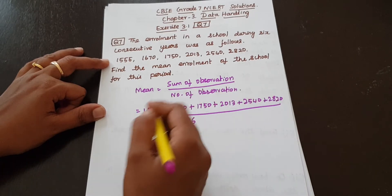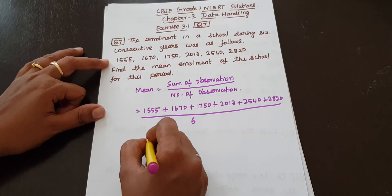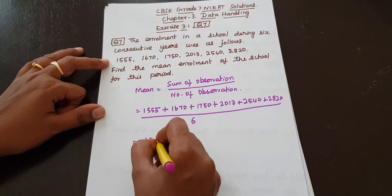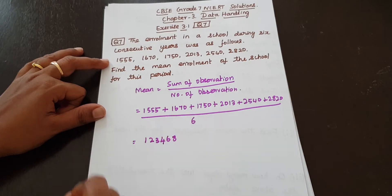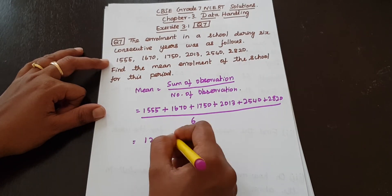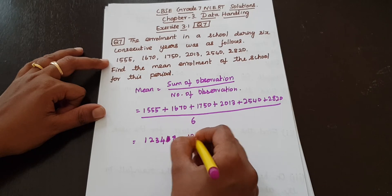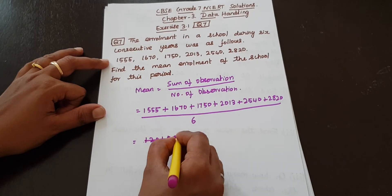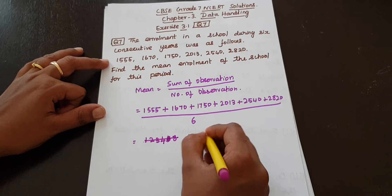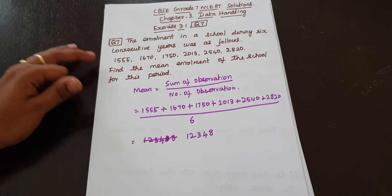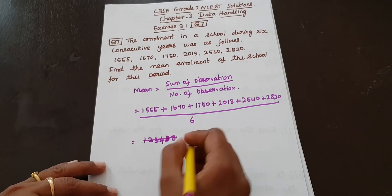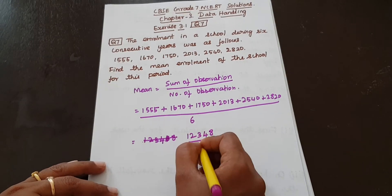So let's add all of them. 1, 2, 3, 4 — sorry — 1, 2, 3, 4, 8. So the total comes to — by 6.